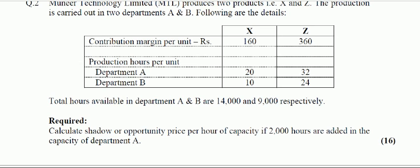The basics of shadow price will be discussed in another video. In this video, I will just solve how to compute the shadow price in this relevant question. The question states: calculate the shadow or opportunity price per hour of capacity if 2000 hours are added in the capacity of Department A. The shadow price states how much your contribution is increasing per limiting factor if one of the limiting factors increases.